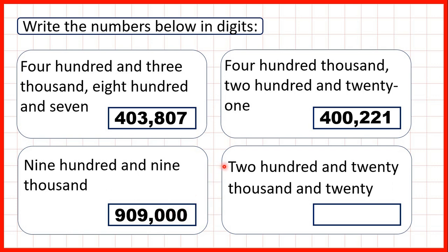Now 220,000 and 20. Again we read the number up to the word thousand and we have 220. So we write that and then a comma. Then we read the rest of our number after the word thousand.